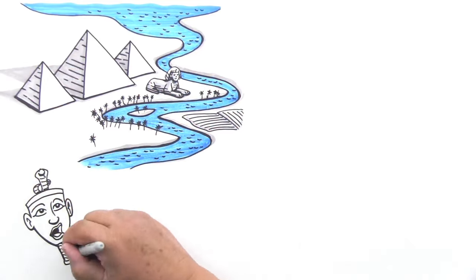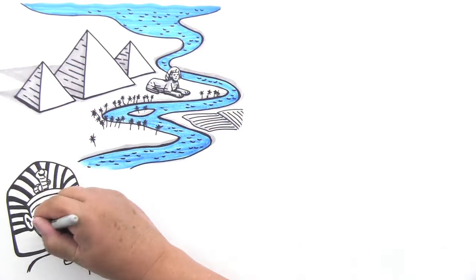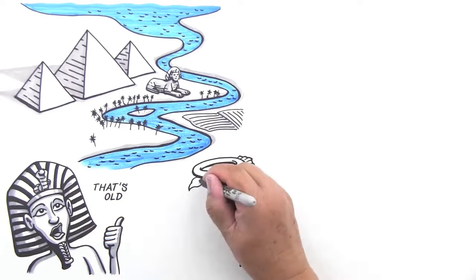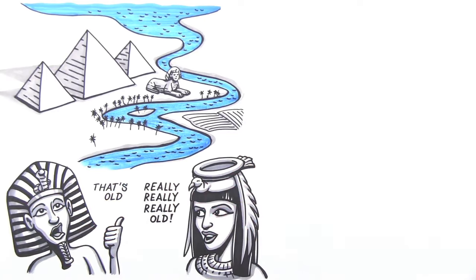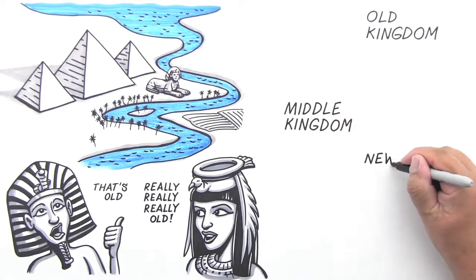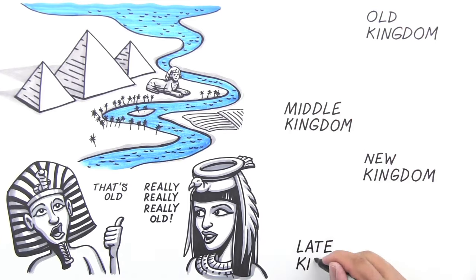When Tutankhamen became Pharaoh, the Great Pyramids were already 1,000 years old, and it was another 1,000 years after that when Cleopatra held power. Egyptologists invented an ingenious system to classify the different periods of Egyptian rule. There's the Old Kingdom, Middle Kingdom, the New Kingdom, and the Later Kingdom.